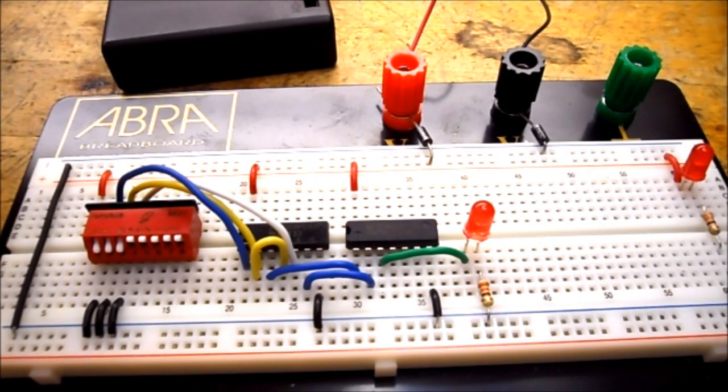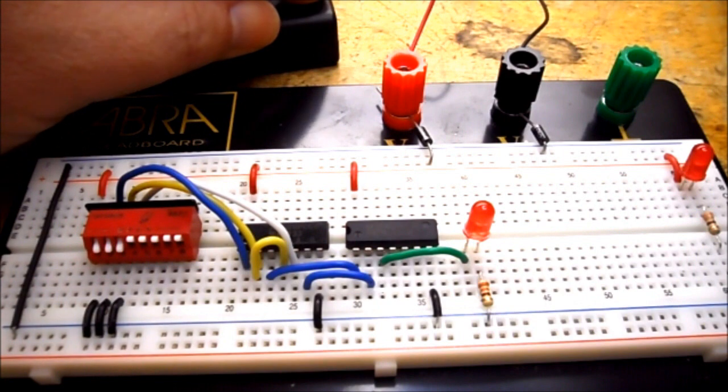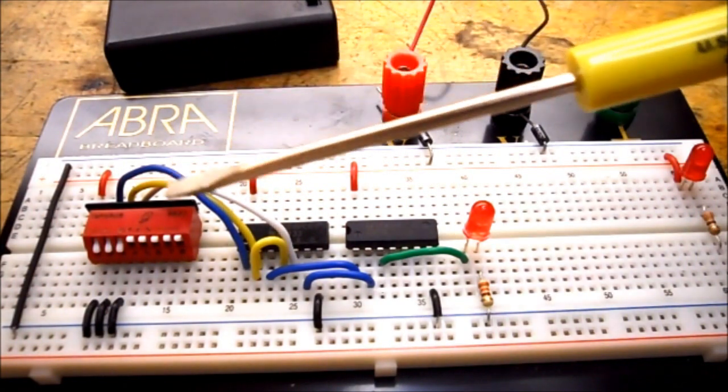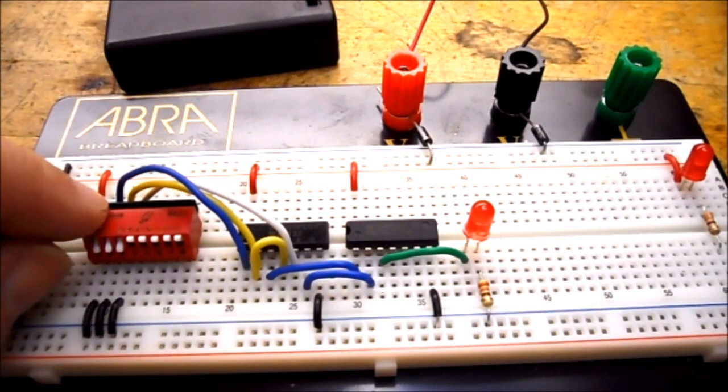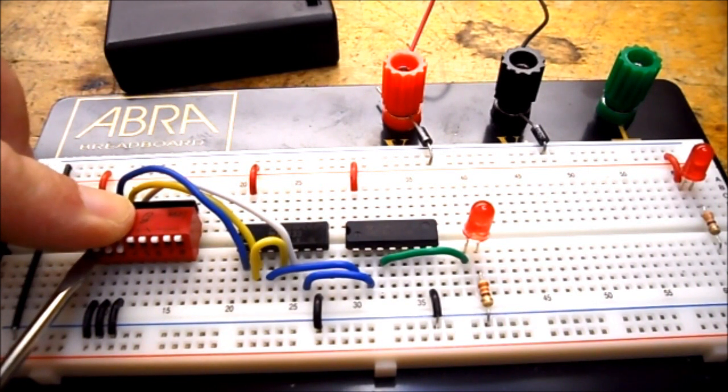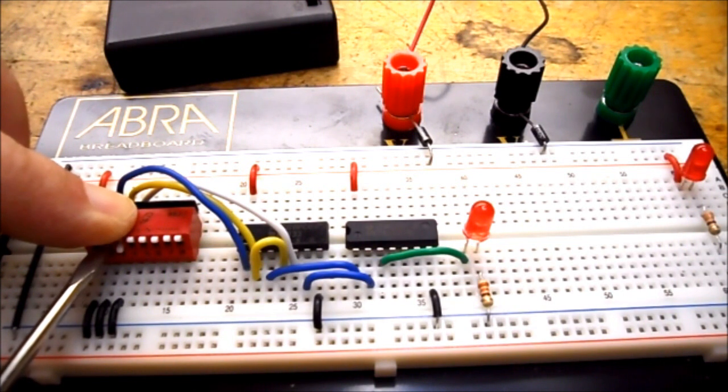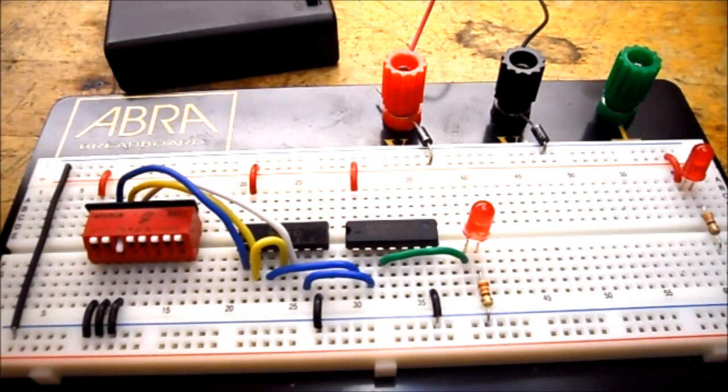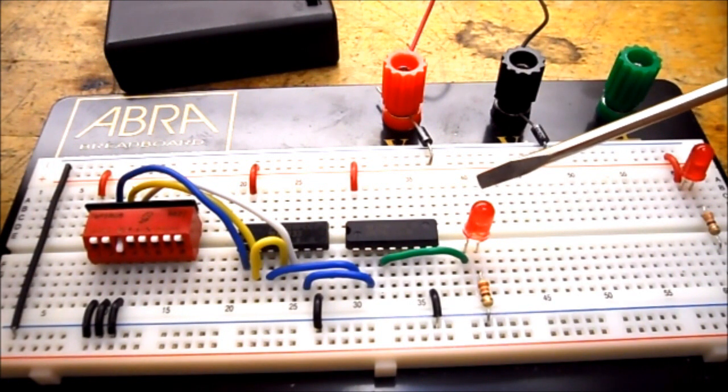So now what I'm going to do is I'm going to turn on my battery pack and I'm looking at my inputs. So if I move my inputs to a logic one and a logic one. Okay so A and B are one. The output should be one, but the light's not on. What went wrong? Where do I start troubleshooting?